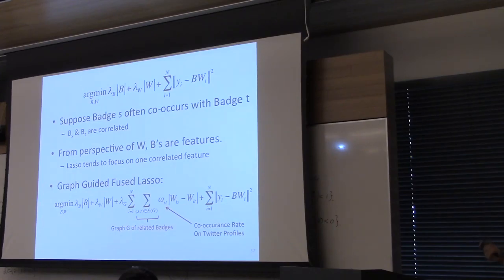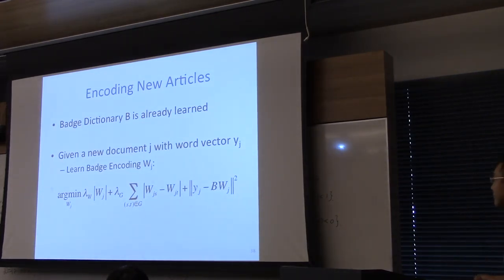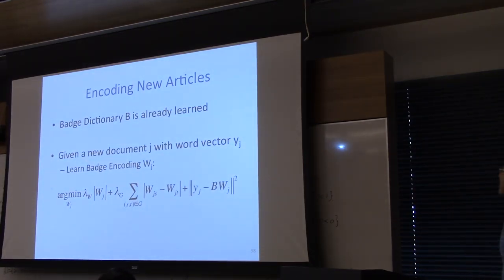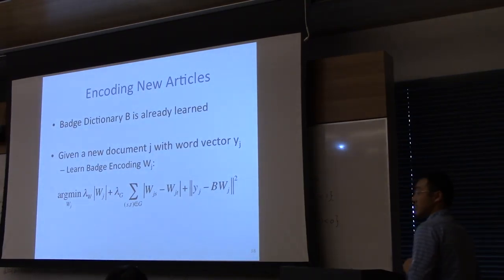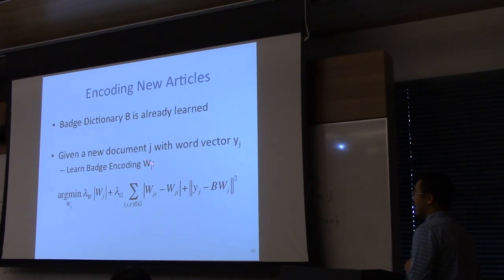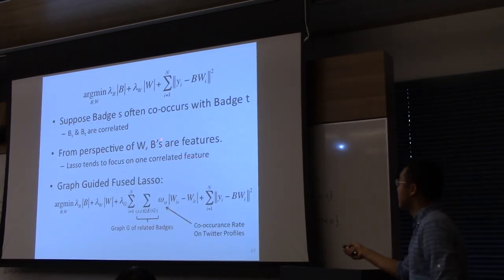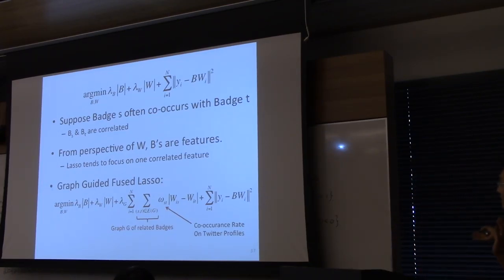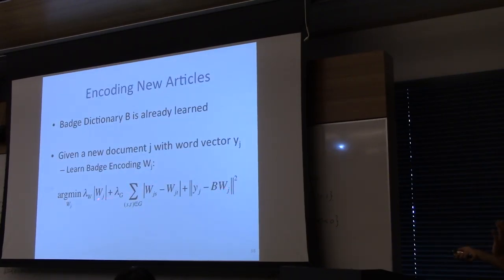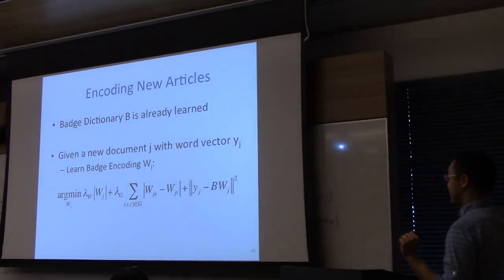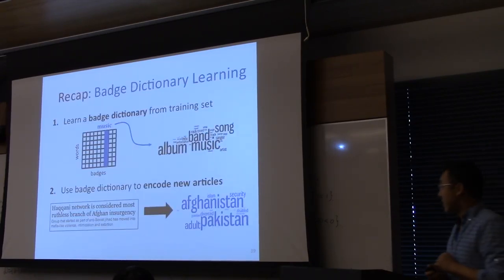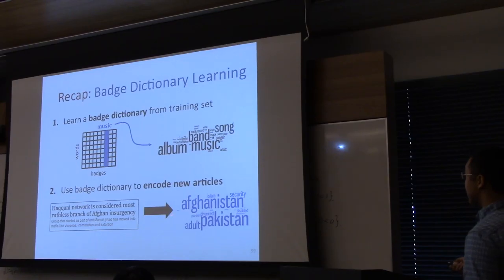Two badges are related by their co-occurrence rate on Twitter profiles. Once the dictionary is trained, a brand new article can be encoded using it. This amounts to learning the badge encoding W_j for a new document J, a vector of length equal to the number of badges. You hold B fixed and solve — with B fixed, all the W's become independent and the problem becomes convex. That's a very easy optimization problem. We learn a badge dictionary from the training set and use it to encode new articles.